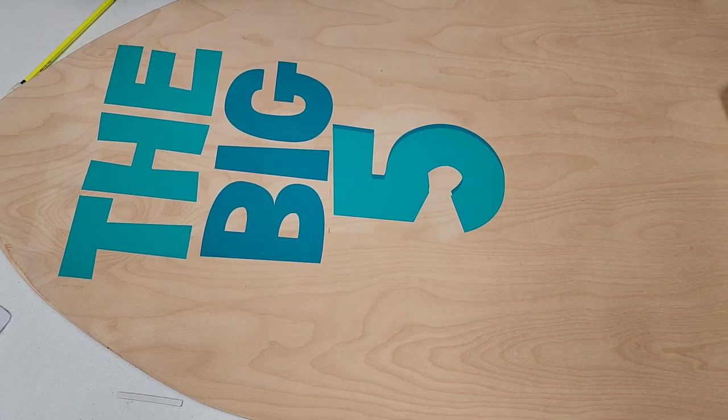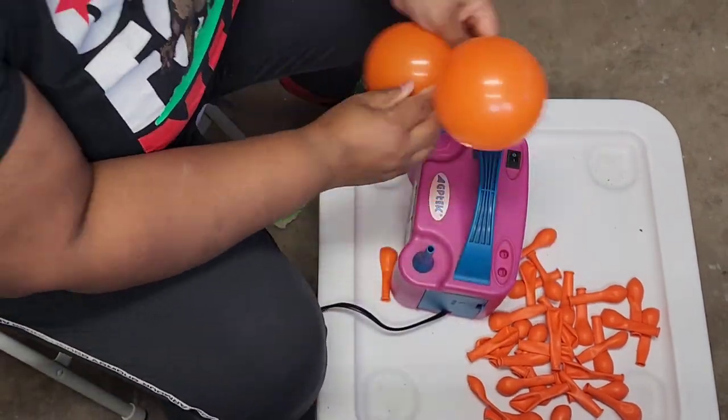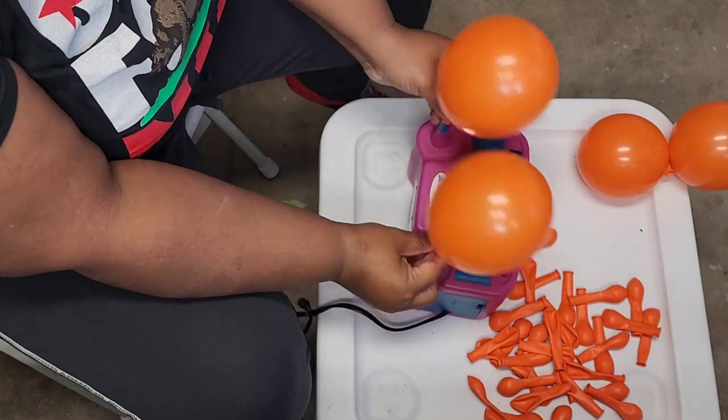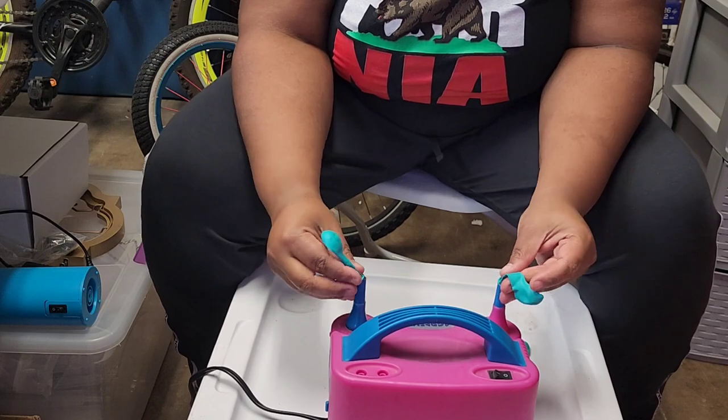Once you have your vinyl all placed the way you want to, you want to start blowing up your balloons. So of course I'm going to start with all my small balloons in each of the colors that I'm using, and then I will move on to the larger balloons in the three colors that I'm using.